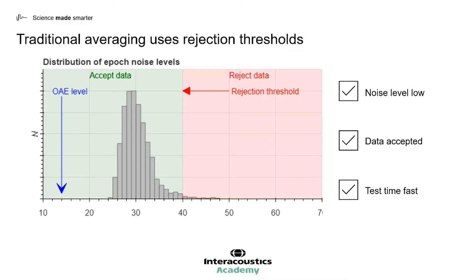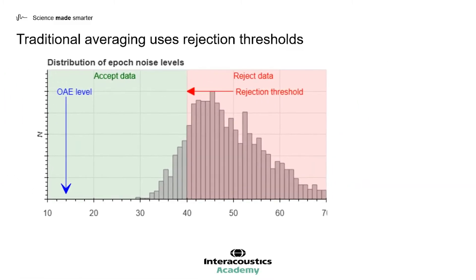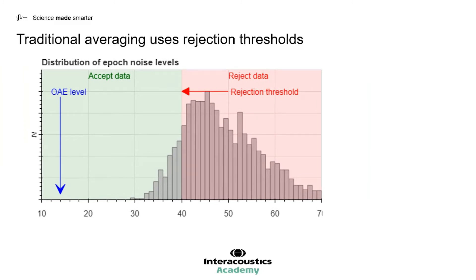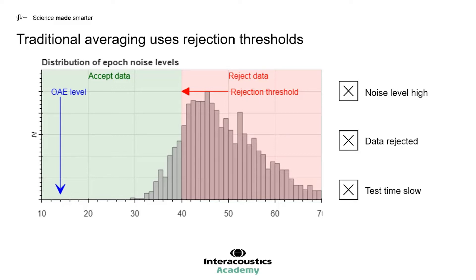However, not all test conditions are this ideal. Here is an example of a test condition from a noisy infant. The noise levels are much higher, yet the rejection levels still remain at the same level. This means we're going to have much more data rejected — everything in the red section is going to be rejected. The accepted data is so few data points that in order to achieve a sufficient signal-to-noise ratio it's going to take a very long time for this test to complete. Setting a rejection level at 40 dB is therefore not ideal for this particular patient.